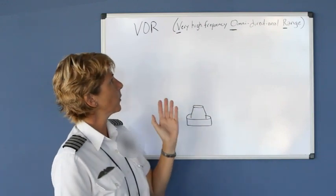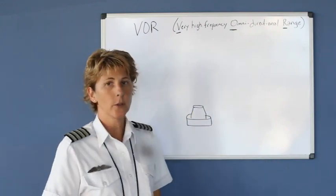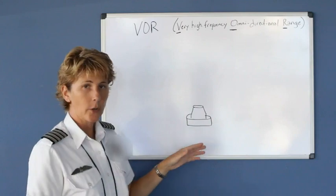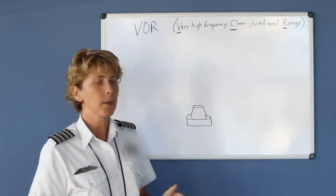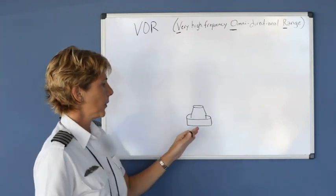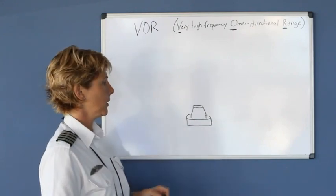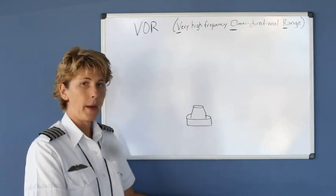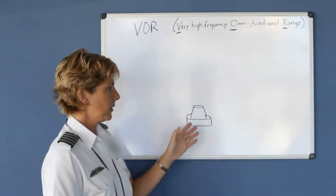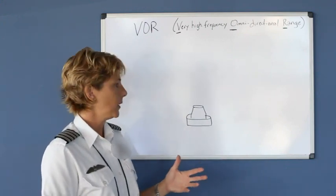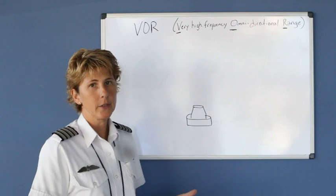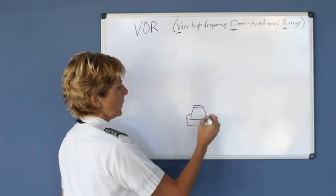So a VOR, which stands for Very High Frequency Omni Directional Range, is a nav aid or a ground-based nav aid that we use to navigate by. And you can see them pretty easily from the air, anything lower than probably 5,000 feet. They're usually in an open pasture. And they vary just a little bit in the shape, but typically they'll look almost like a bowling pin or something in a bowling alley.